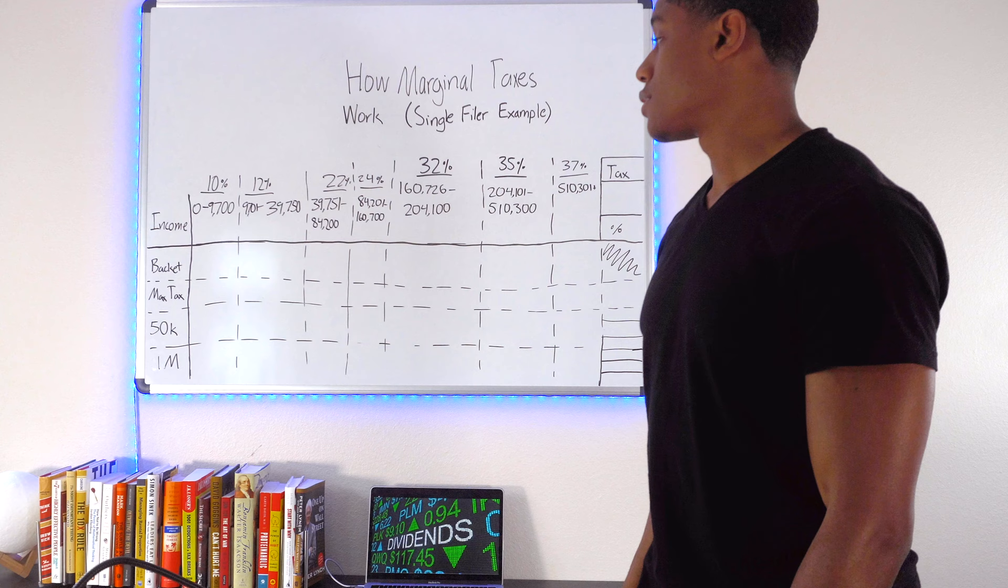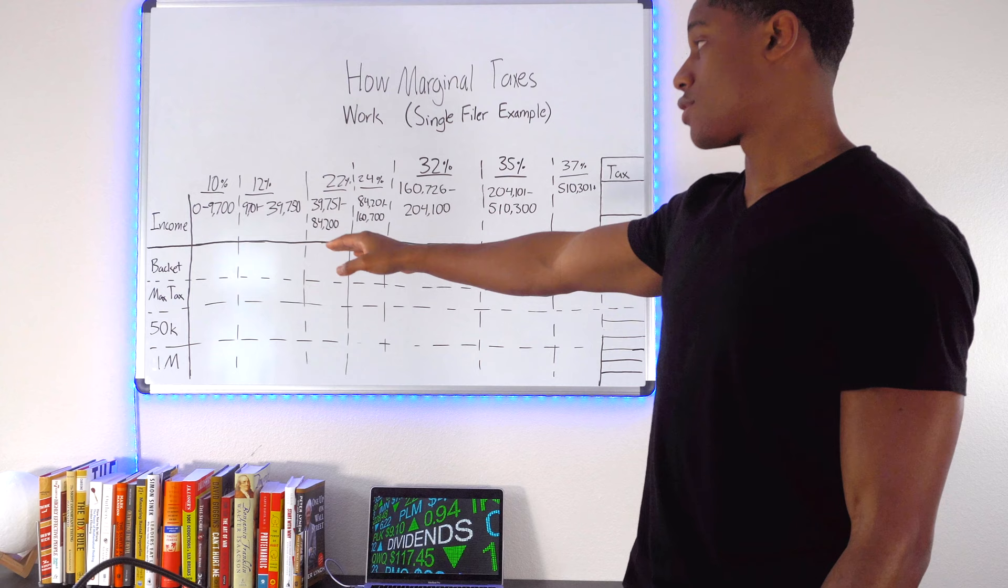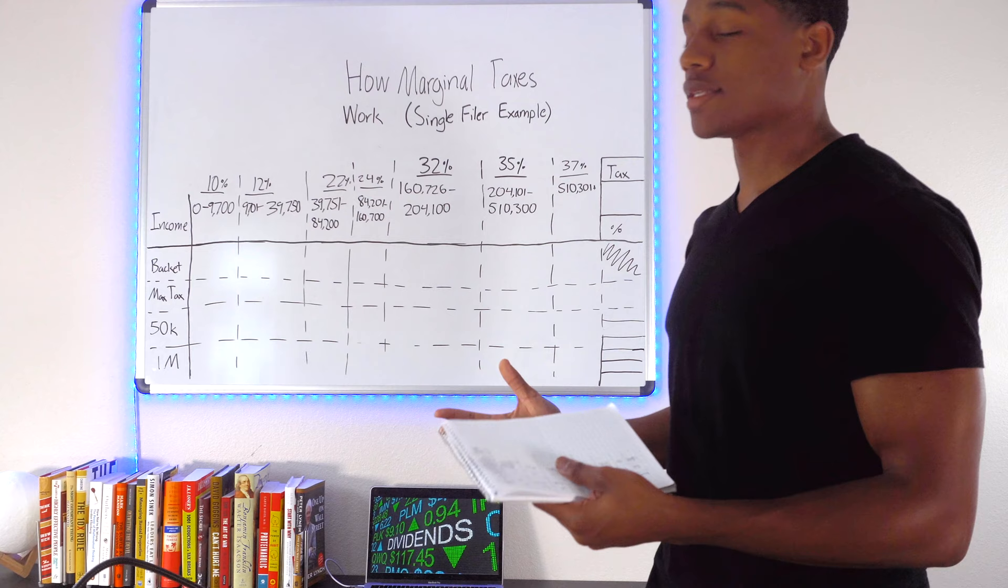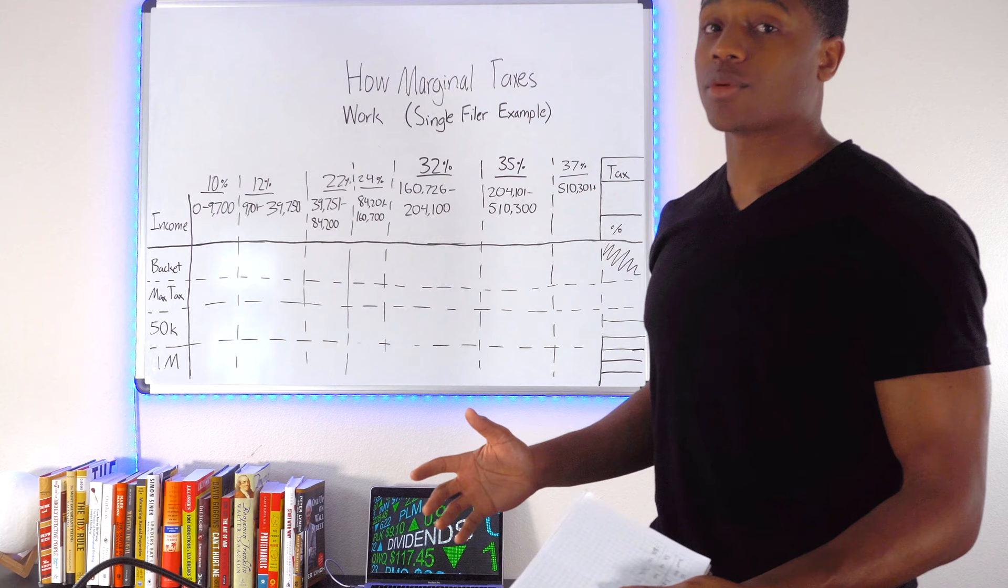We got 22% ending at 84,224. You can see the chart. So that's how it works. It progresses through the progressive tax system. So then let's fill in these brackets. Basically what this bracket thing is, is I'm just saying how big is the actual tax bracket.